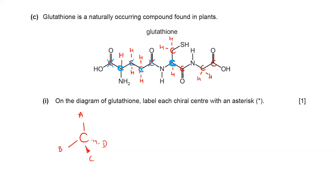This carbon has a double bond - it must be bonded to four groups, but a double bond means it can only bond to fewer than four groups, so that cannot be a chiral center. Don't look at nitrogen. This carbon has two hydrogens - not a chiral center. Double bond - not a chiral center. One more carbon with two hydrogens - not a chiral center.